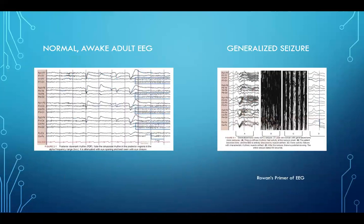As an example, each one of these computer readouts represents a brainwave between two sensors on the brain. On the left is an example of a nice, awake, adult EEG. On the right, you can see a big difference — lots of large, black, thick lines going all over. This is when there's increased electrical activity that causes the arms and legs to convulse and makes the EEG look like this.